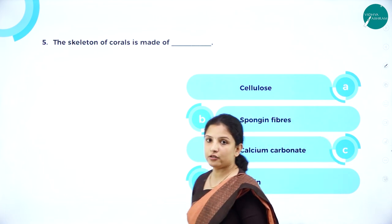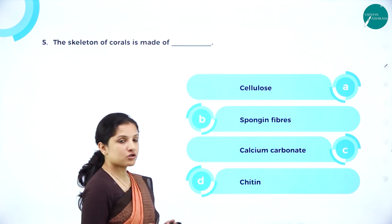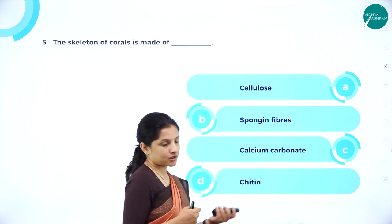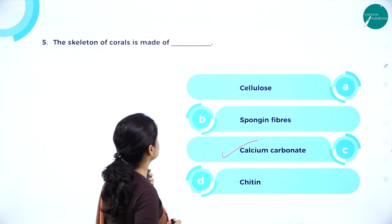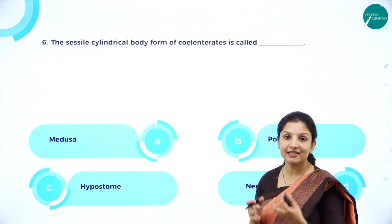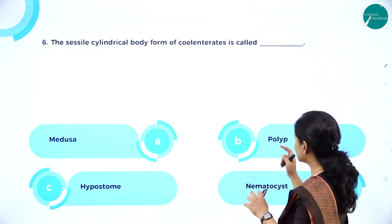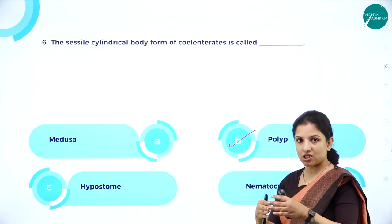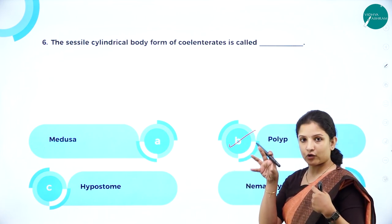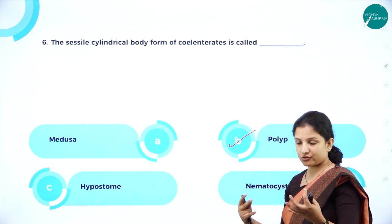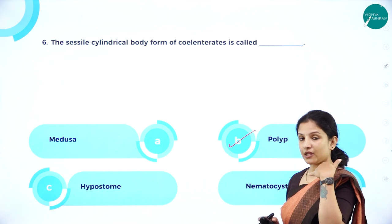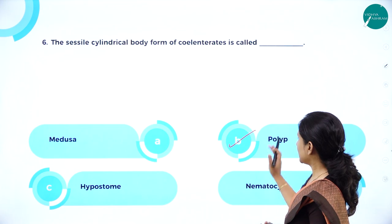Fifth MCQ: the skeleton of corals is made of — cellulose, spongine fibers, calcium carbonate, or chitin? Cellulose is found in plants; spongine fibers are seen in sponges (Porifera); chitin is not correct either. The answer is calcium carbonate. Sixth MCQ: the sessile cylindrical body form of coelenterates is called — medusa, polyp, hypostome, or nematocysts? Medusa is umbrella-shaped and free living; hypostome is the mouth opening; nematocysts are defense organs. The answer is polyp, which is cylindrical and sessile.